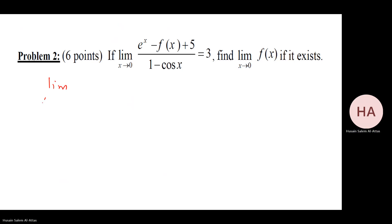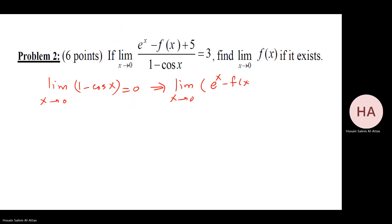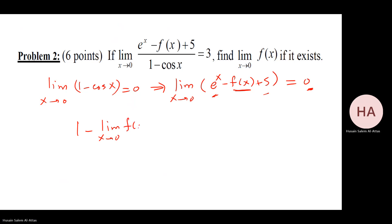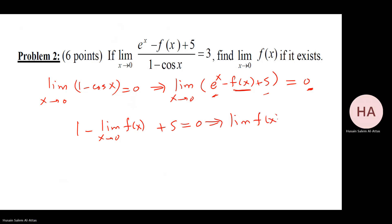Same idea: the limit as x goes to zero of one minus cosine in the denominator equals zero, meaning the limit of the numerator must also equal zero. Since this limit exists and that limit exists, their difference must also exist. Setting up: one minus two times the limit of f of x as x goes to zero plus five equals zero, so the limit of f of x equals six.